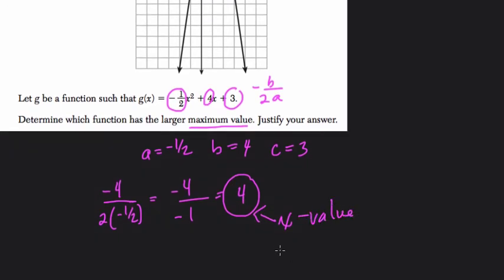To find the actual vertex, we take this value 4 and plug it into our function because that's the input. x is the input, we want the output. We want the height at 4. So let's plug in 4 and see what happens.